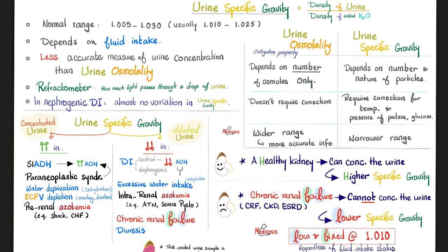What causes your urine to be concentrated? Maybe you are dehydrated, or maybe you have too much ADH reabsorbing water from the kidney, leaving less water in the urine — concentrated urine. This ADH could be secreted by a cancer; we call this paraneoplastic syndrome, such as small cell lung cancer. Other causes include water deprivation and extracellular fluid volume depletion, such as vomiting and diarrhea. If you have a state of shock, congestive heart failure, hemorrhage, or third-degree burns, but your kidney is still okay, a good kidney is capable of concentrating the urine, so your urine will be concentrated.